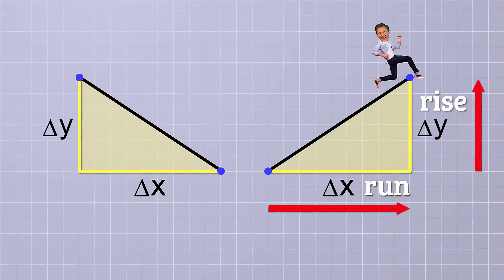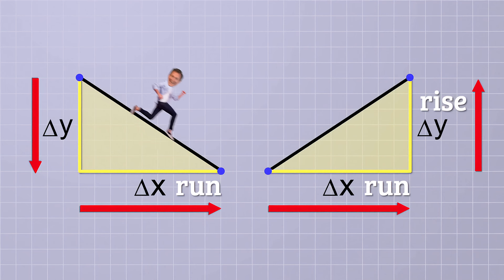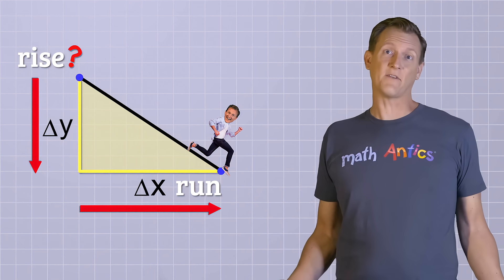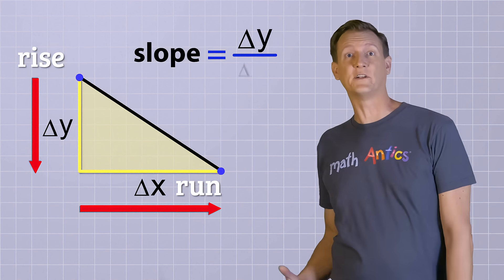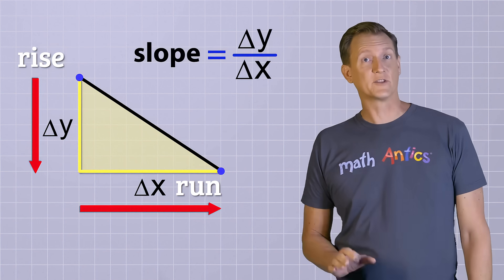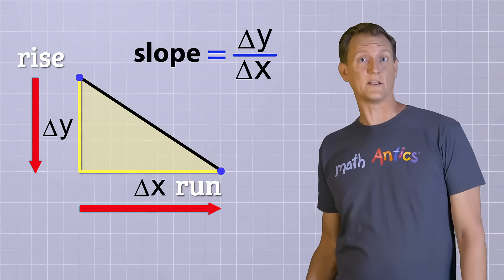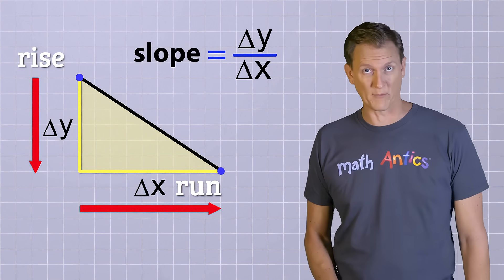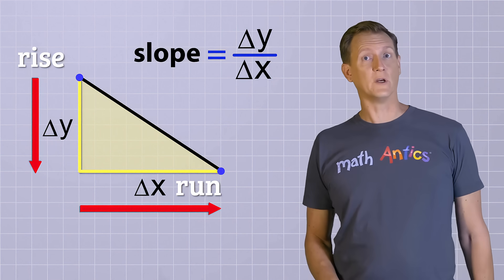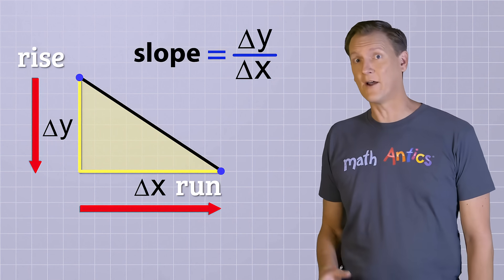What if the line has a negative slope, which means that as you move in the positive x direction, the y value decreases instead of increases? That would be like going downhill instead of uphill. And the word rise seems less fitting in that case. Because of that, we'll just use delta y over delta x in this video. But it's certainly not wrong to use the terms rise and run, especially if it helps you remember the formula. But if you do, just remember that the rise can also be negative.